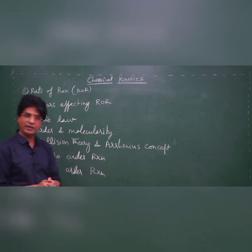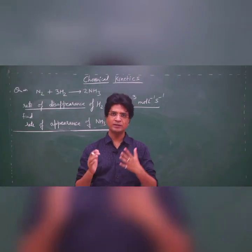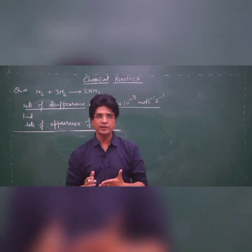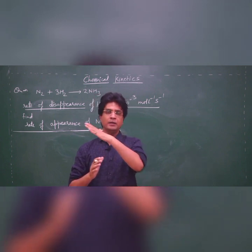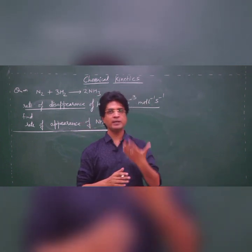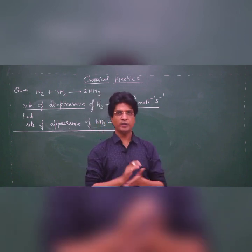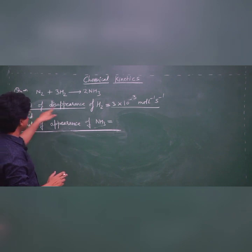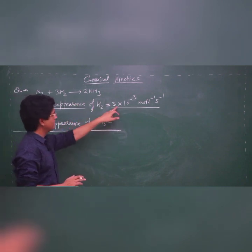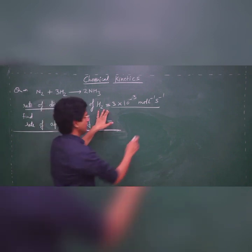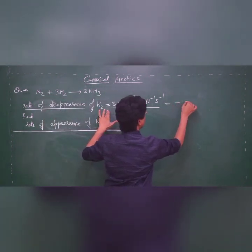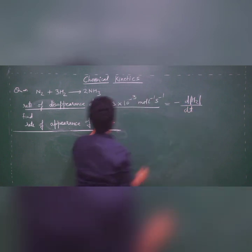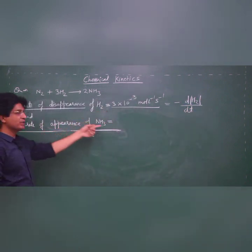Let's begin with rate of reaction. While doing questions on rate of reaction, just keep in mind to connect all the rates of appearance and disappearance via rate of reaction. For example, in this question they have given you the rate of disappearance of hydrogen. That is nothing but minus dH₂/dt, and they are asking the rate of appearance of ammonia.